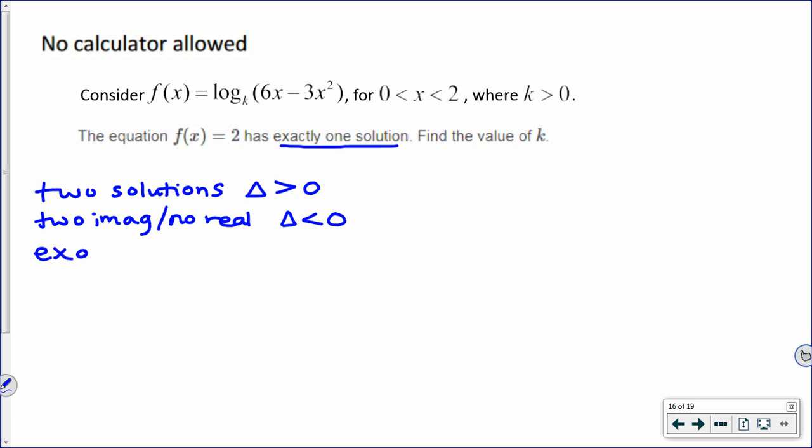And if it's exactly one solution, which sometimes is written as two repeated, because it would be the same value twice, which is actually just one value, that would be where the discriminant equals zero.